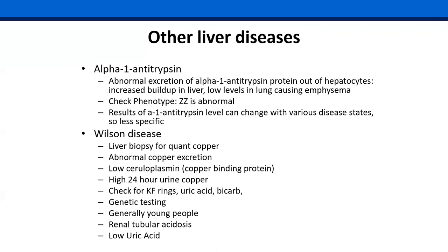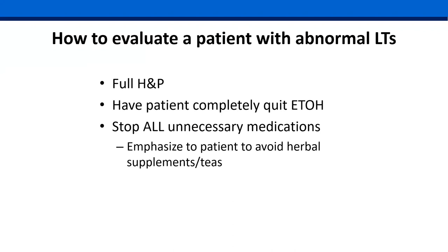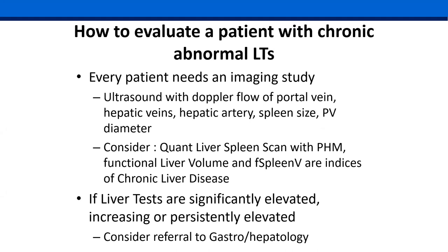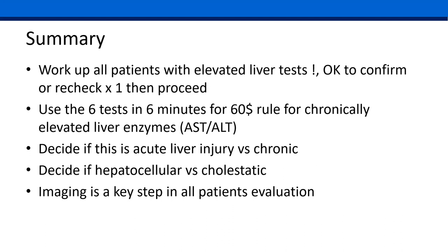For alpha-1 antitrypsin, get a level; if suspicious and the level is low, get a phenotype and possibly a biopsy. For Wilson disease, the extensive workup that's required was already discussed. In summary: alcohol and fatty liver are the most common causes — you need to intervene now to save their life, don't take it nonchalantly. Get an ultrasound Doppler on everybody with elevated liver tests. Consider quantitative assays when they become available. Work up all patients with the big six: six tests, 60 minutes, 60 dollars. Make sure it's not acute liver injury; if it is, that requires more workup. Imaging is a key step we're going to reinforce.